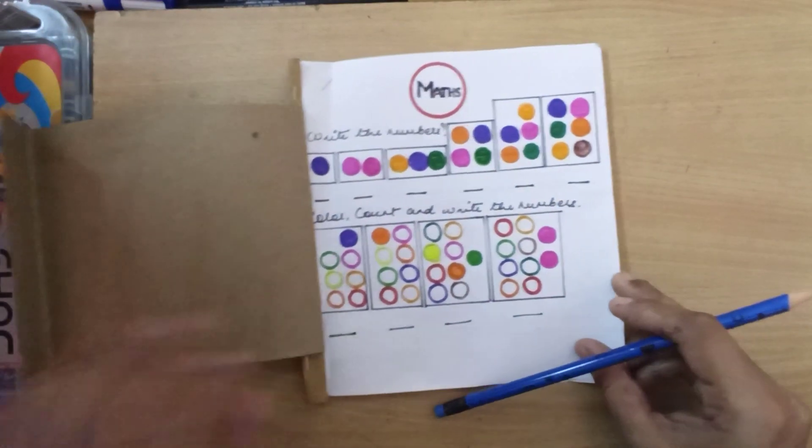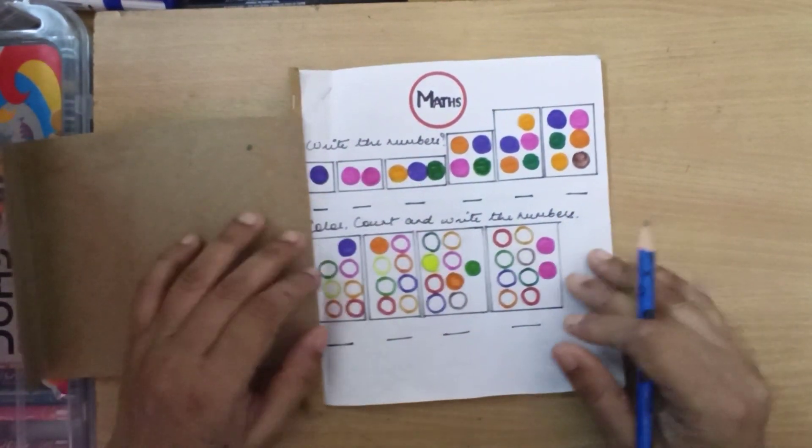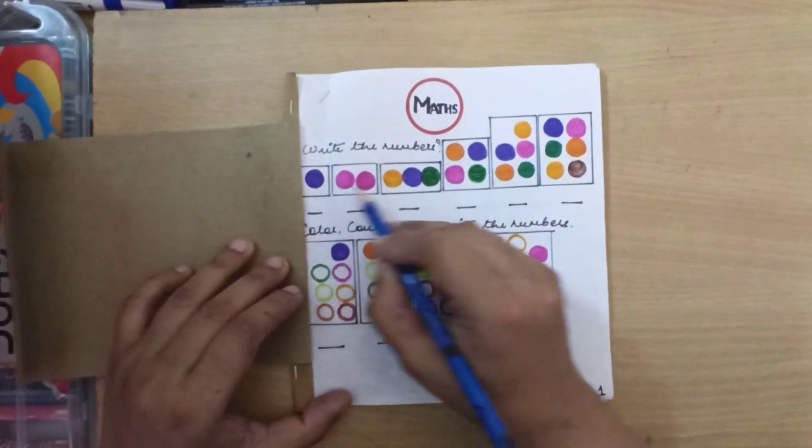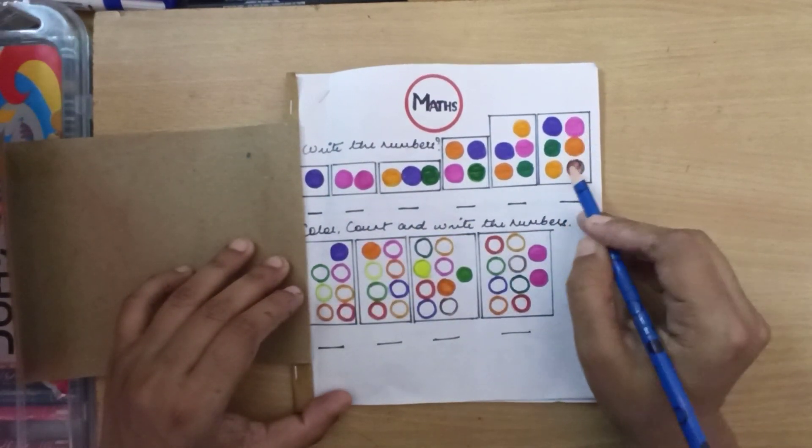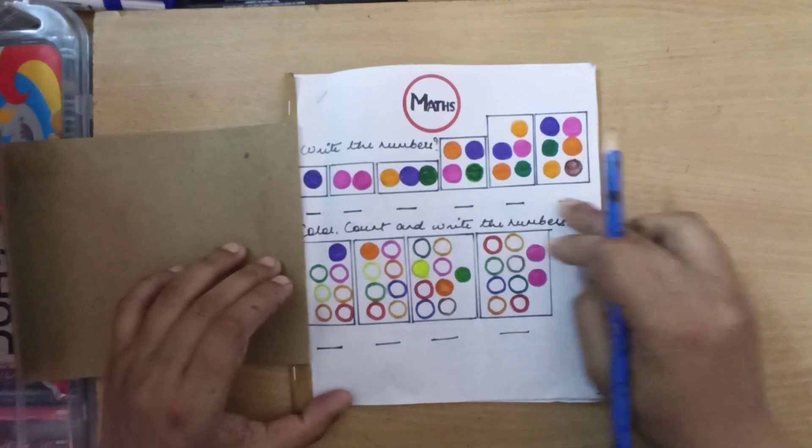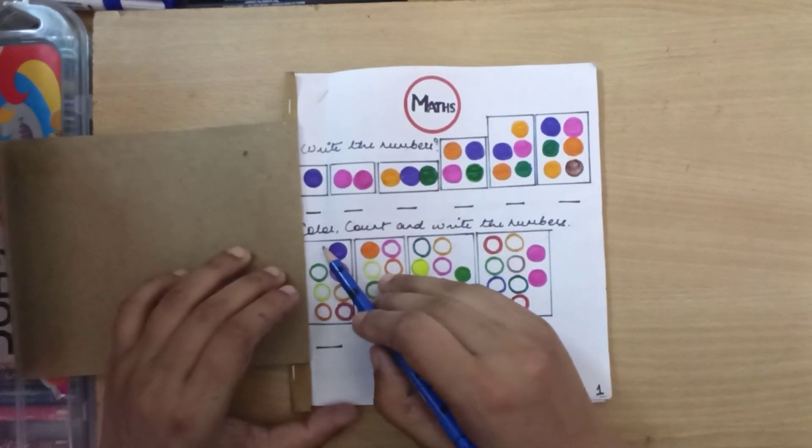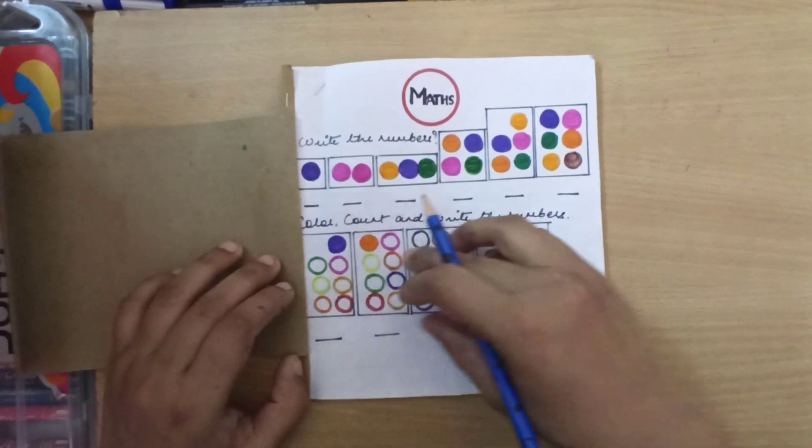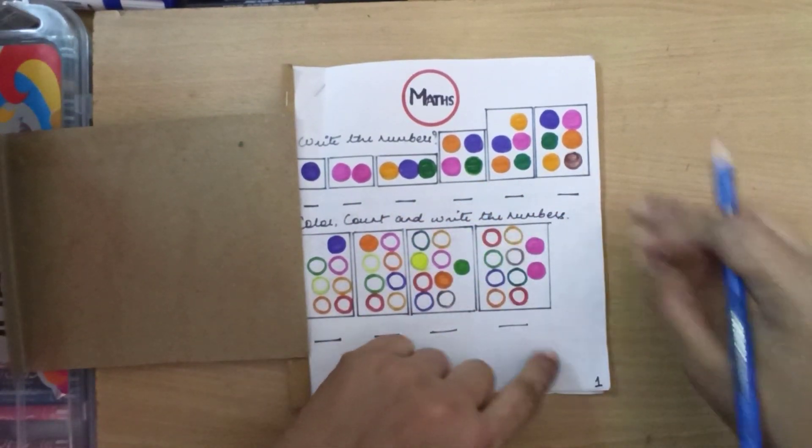So my first page talks about numbers. I've created little colorful balls where I've put these colorful balls in these boxes and the kid is supposed to count them and write them down there. Then over here I've written color, count and write the numbers. Here again the kid is supposed to count the balls, color them and write down over here.